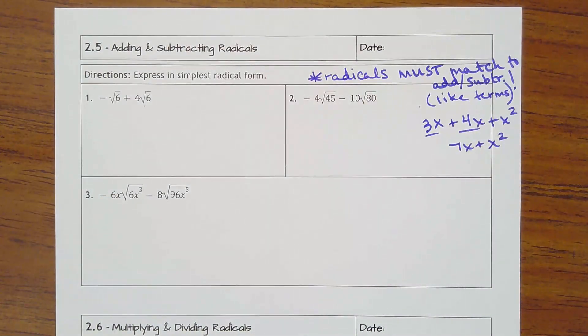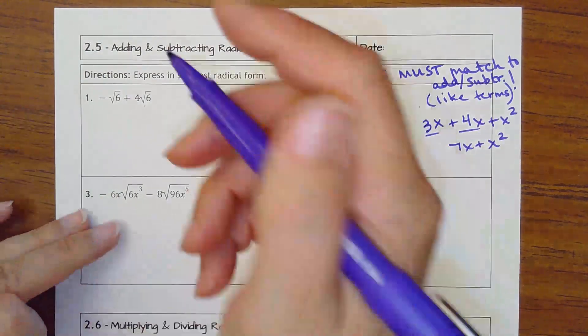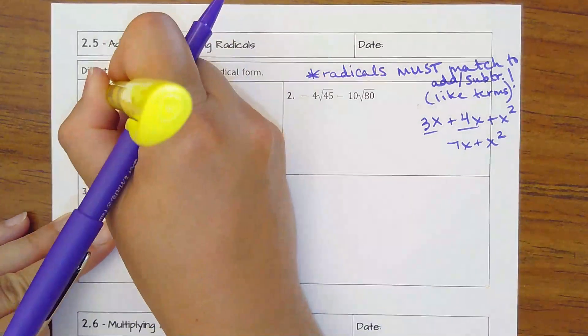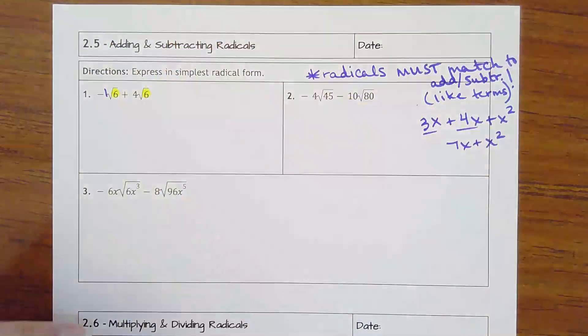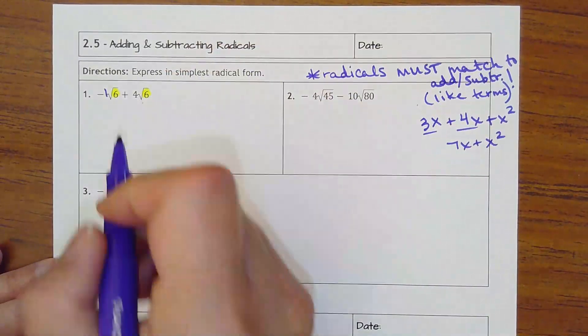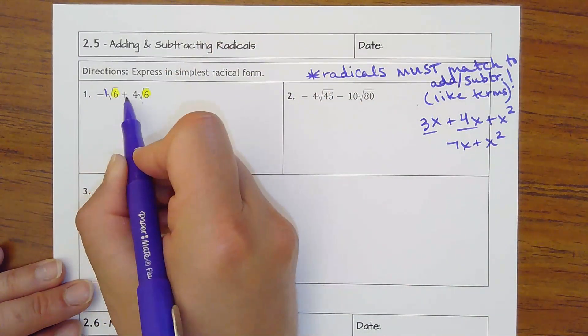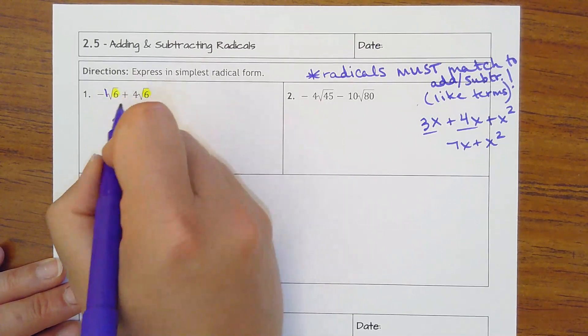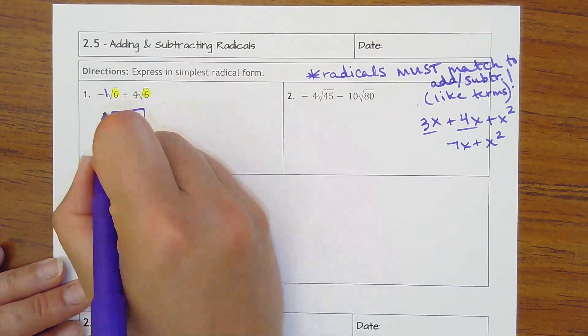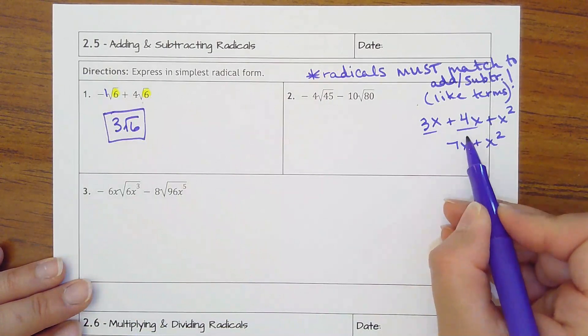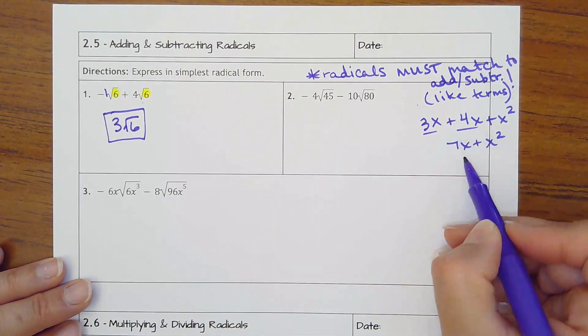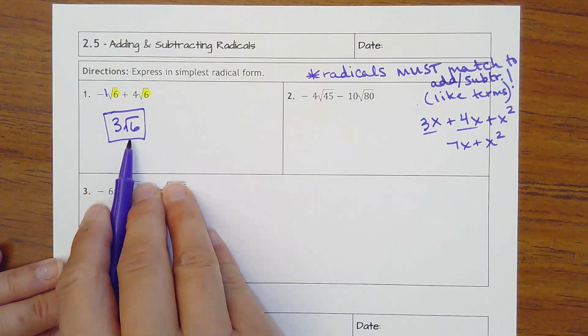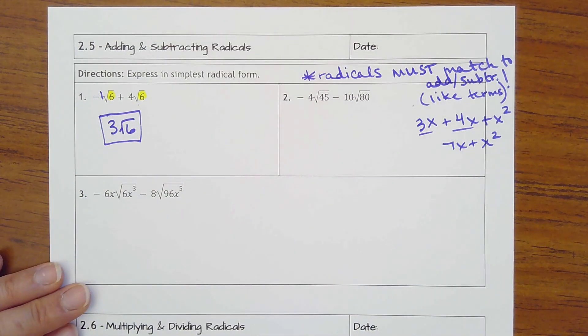It's what's under the radical that matters. In number 1, I see a negative square root of 6. That's really negative 1 square root of 6 plus 4 square root of 6. So it's asking how many square root of 6s do you have? Well, negative 1 plus 4 is 3, square root of 6. You do not change the radical. Just like we kept 7x as x, it's how many square roots of 6 plus how many square roots of 6 makes how many square roots of 6?